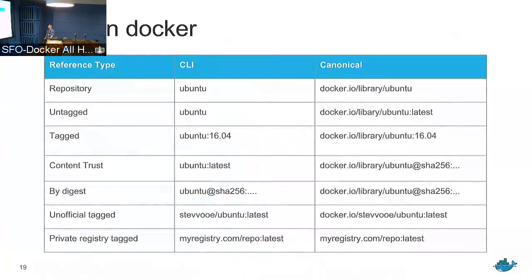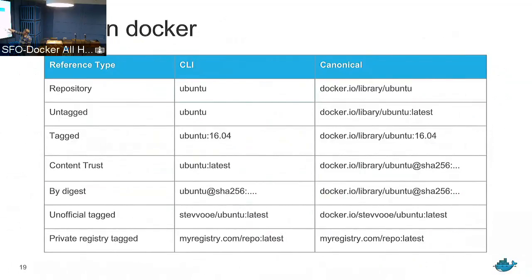A bit more about naming in Docker: this slide shows all the different naming formats in Docker. There's a grammar — it's complex. We've tried to get it right, and naming isn't crazy but the grammar is. We finally unified it into a single package just in the last few months: the distribution reference package. We have short names like 'ubuntu', untagged references that default to 'latest', tagged references, and we can expand any of these to a full canonical reference.